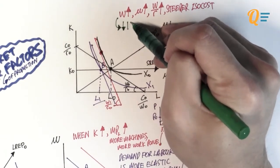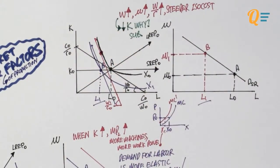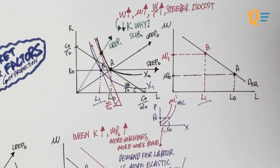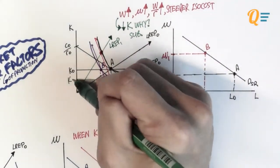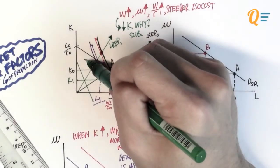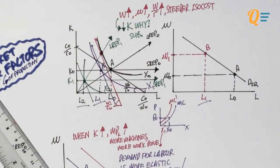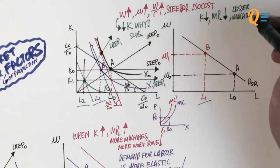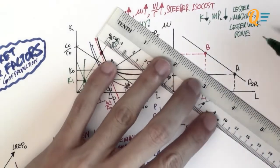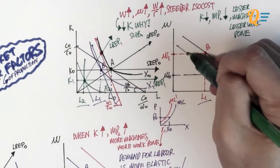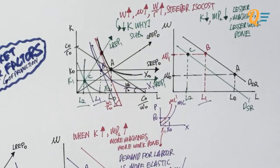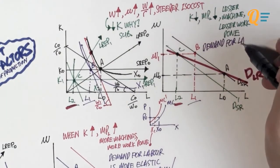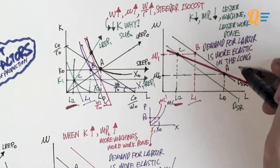In the long run, the firm reduces its capital. When labour is more expensive, you cut labour, and with fewer workers you need fewer machines. The long-run expansion path becomes steeper, the short-run expansion path shifts down, and the new cost-minimising point is at L2 — hiring even less labour. When capital falls, the marginal product of labour falls because there are fewer machines, so the MPL curve shifts left, meaning the short-run demand curve also shifts left. Connecting points A and C again gives the long-run demand curve, which is again more elastic than the short-run curve.